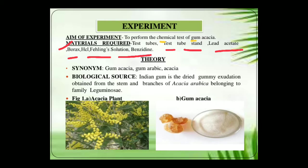If we study about the details of the drug, we will see that the synonym of the drug is gum acacia, gum arabic, and acacia. The biological source: it is the dried gummy exudation obtained from the stem and the branches of the plant Acacia arabica, belonging to the family Leguminosae.